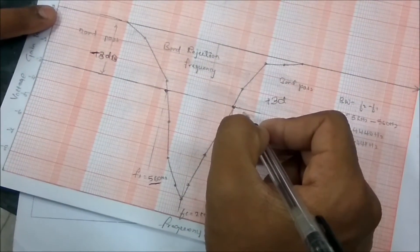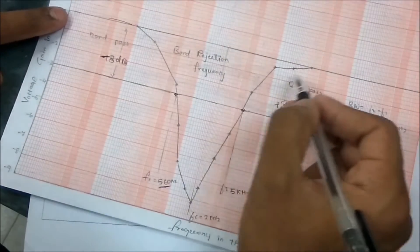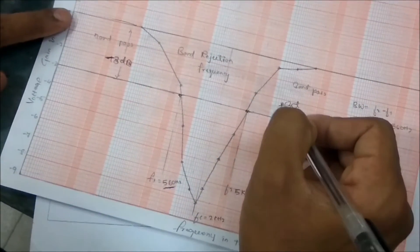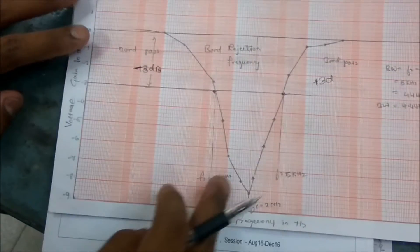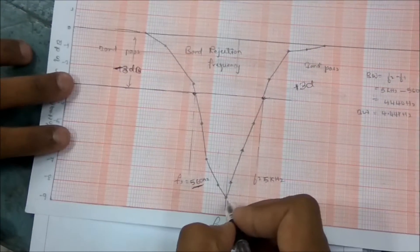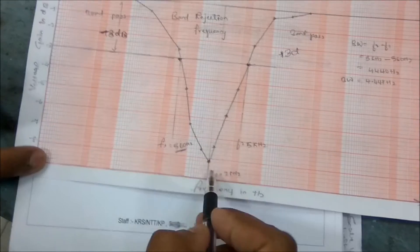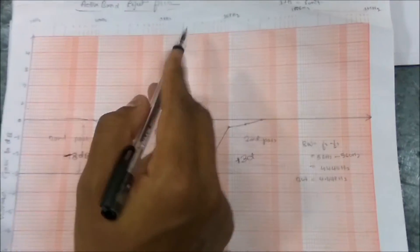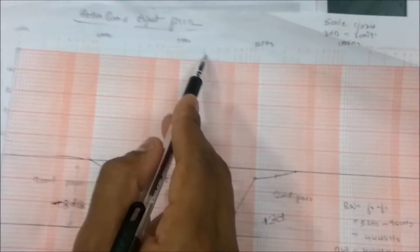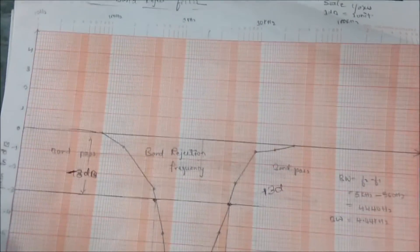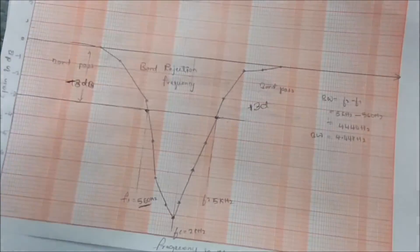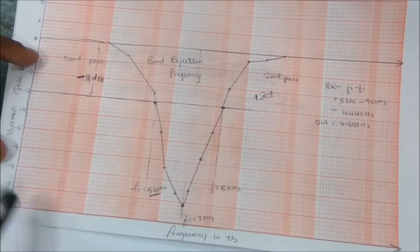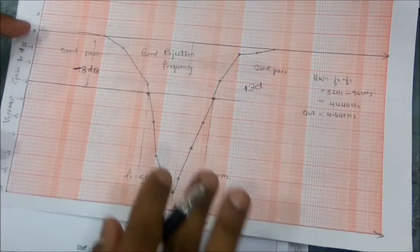At exactly 2kHz — our center frequency — we are getting a very low gain of approximately -9dB. So at the center frequency the signal is most attenuated, which is exactly what we expect from a band stop filter.